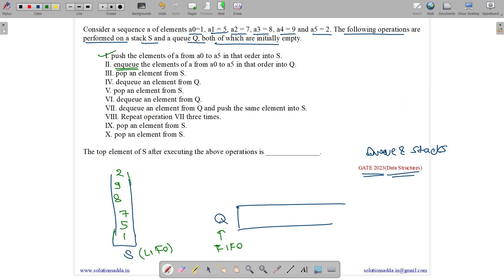Then we have enqueue, enqueue means pushing or entering the values. So this has push and pop, and Q has enqueue and dequeue. Enqueue means pushing, dequeue means popping. Enqueue the elements of A from A0 to A5. So we have 1, 5, 7, 8, 9 and 2.